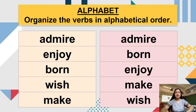Here is the correct alphabetical order: admire, born, enjoy, make, and wish. How many correct answers did you get? Were you able to organize the verbs in alphabetical order?